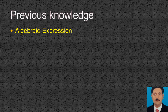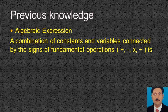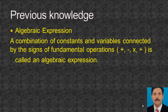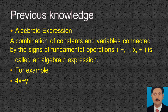Previous knowledge: we have already learned about algebraic expressions. A combination of constants and variables connected by the sign of fundamental operations — addition, subtraction, multiplication, and division — is called an algebraic expression. For example, 4x plus y. Here 4 is the coefficient of variable x, and y is another variable. These two terms are connected by the operational sign positive.